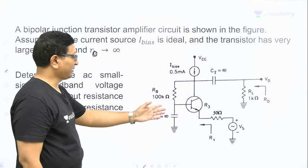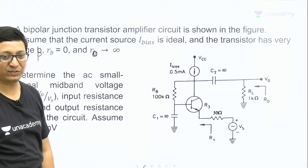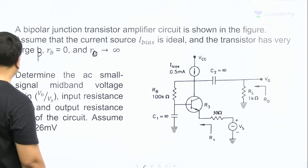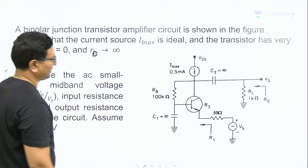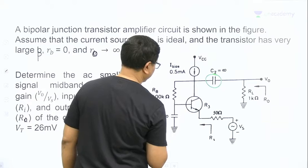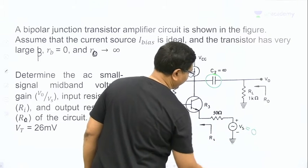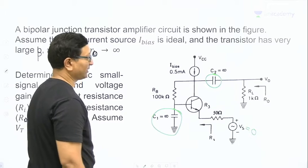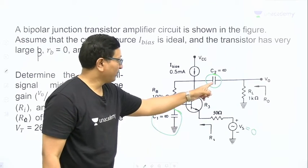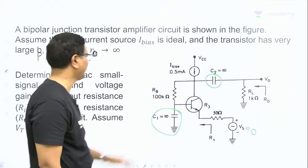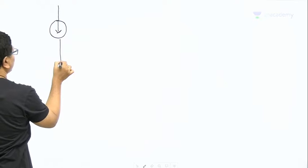To solve this, first let us take the DC equivalent circuit. With respect to DC, all capacitors act as open circuit. So the two capacitors act as open circuits, and the AC source V_s is set to zero, which means it acts as a short circuit. So opening the two capacitors and shorting the AC source gives us the DC equivalent circuit.